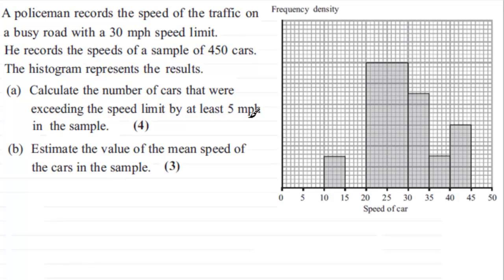So if we're looking for the number of cars that are exceeding the speed limit by five miles per hour that is going to be a total of 35 miles per hour because the speed limit is 30 miles per hour.